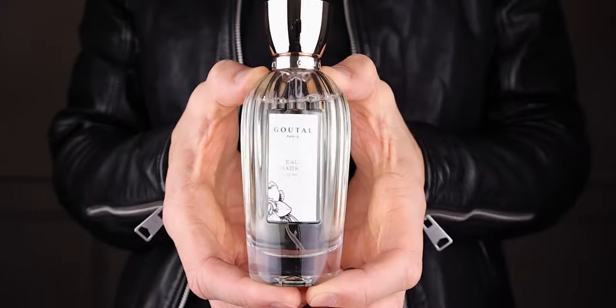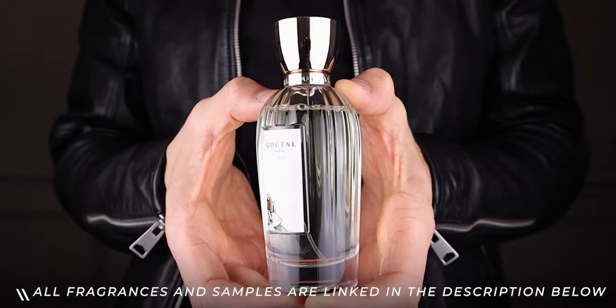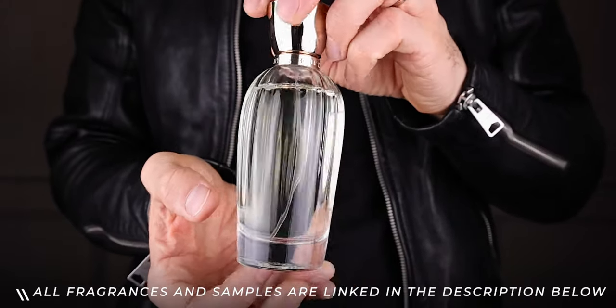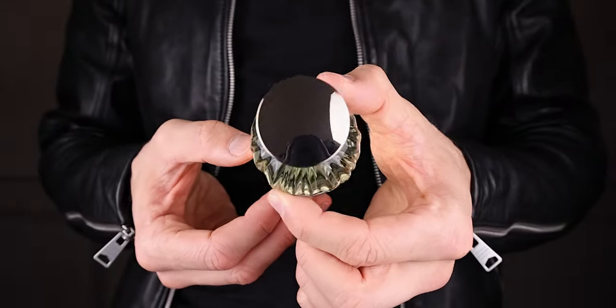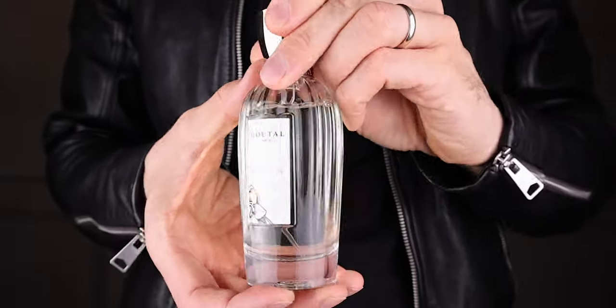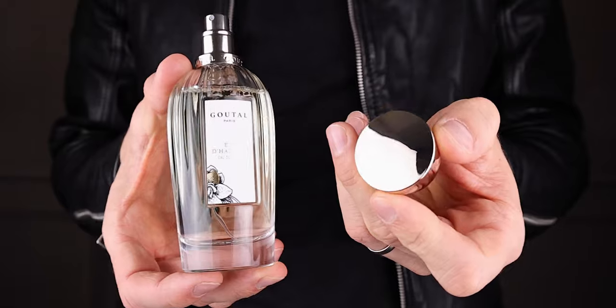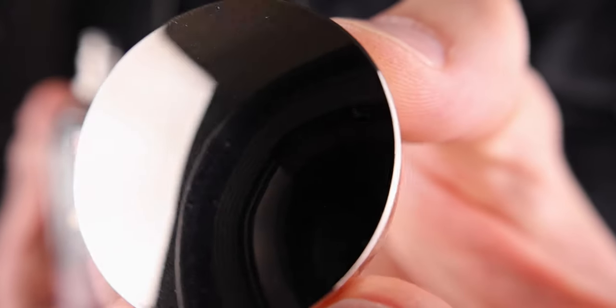First up we've got a really timeless and chic sort of a freshie and it is Eau Dardien, I think that's how you pronounce it, from Goutel. The bottle is absolutely beautiful, it looks like the older style bottles in its design but the scent itself is citrusy, it's kind of green, it's a tiny bit herbal.